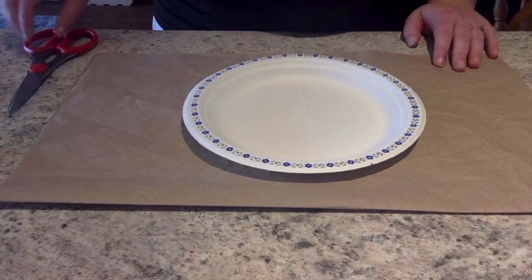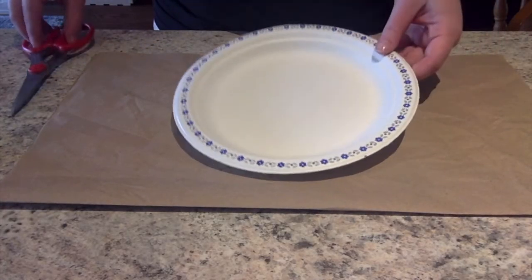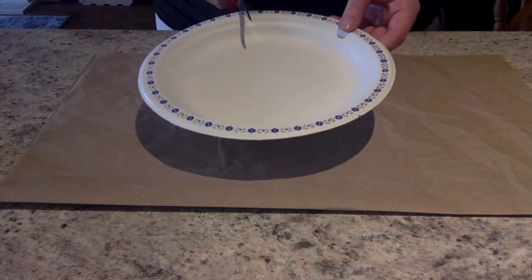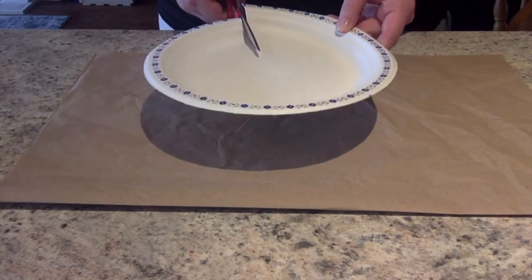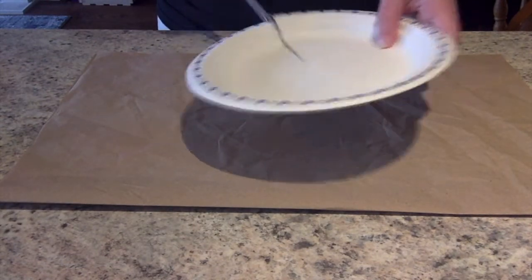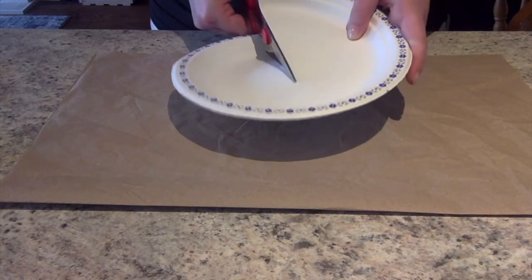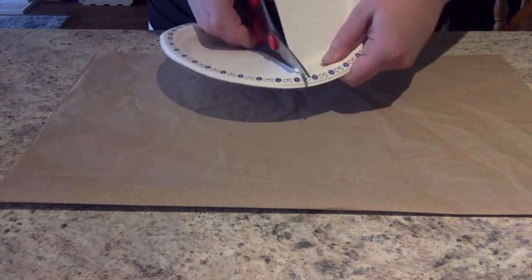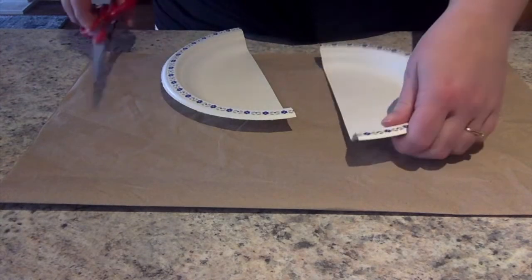Our first step is going to be to grab our scissors and our paper plate and cut it in half. Now it doesn't have to be perfect but you want to try and make it about half the paper plate just so that it's easier to do some of our later steps.